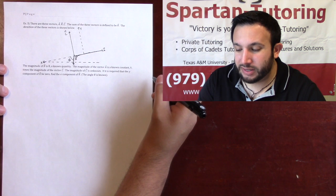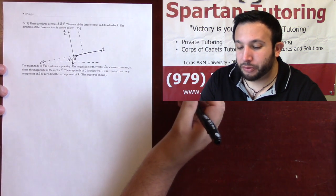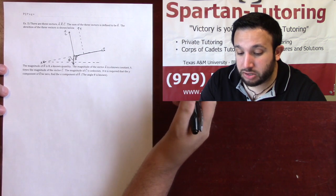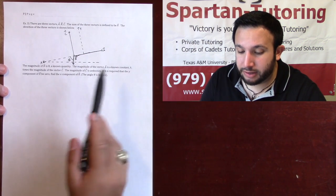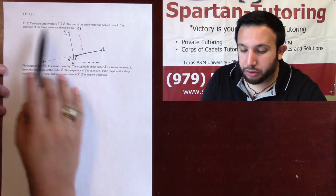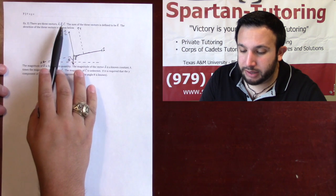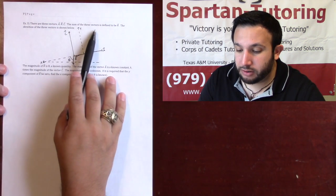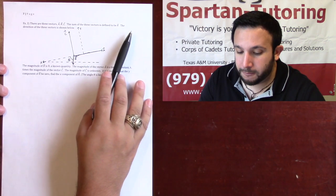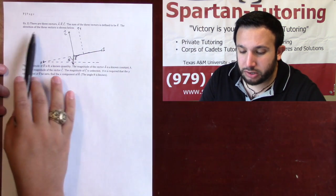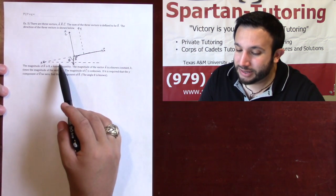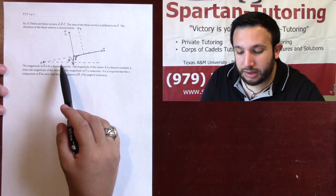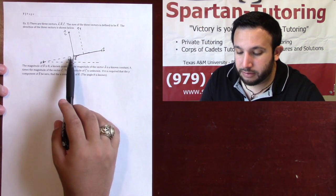In this video, the last example dealing with vectors, there's a lot going on. There are three vectors A, B, and C. The sum of the three vectors is defined to be R. The direction of the three vectors is shown, but take a look — the coordinate system is all kinds of jacked up.